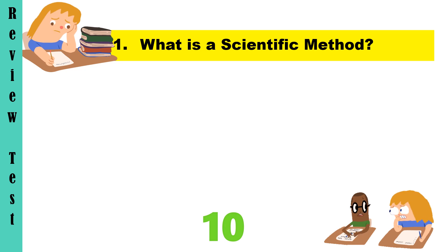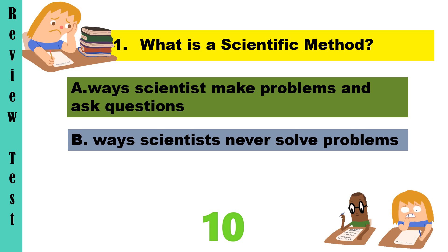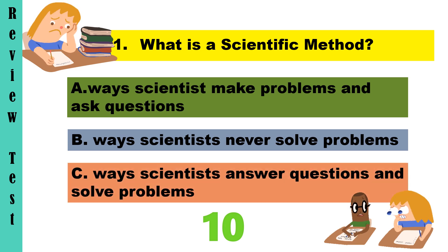First question. What is a scientific method? A. Ways scientists make problems and ask questions. B. Ways scientists never solve problems. Or C. Ways scientists answer questions and solve problems. Your timer starts now!